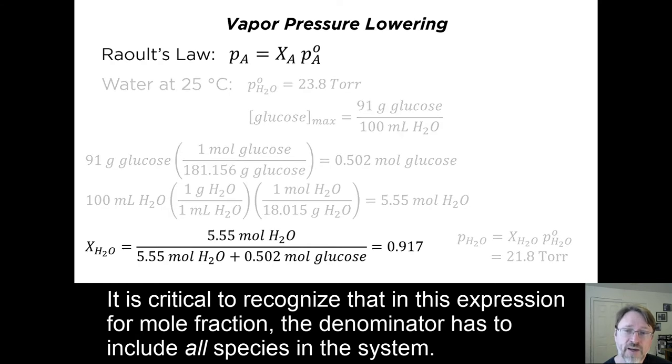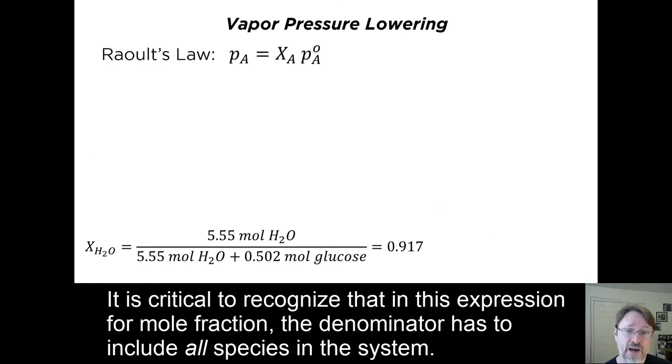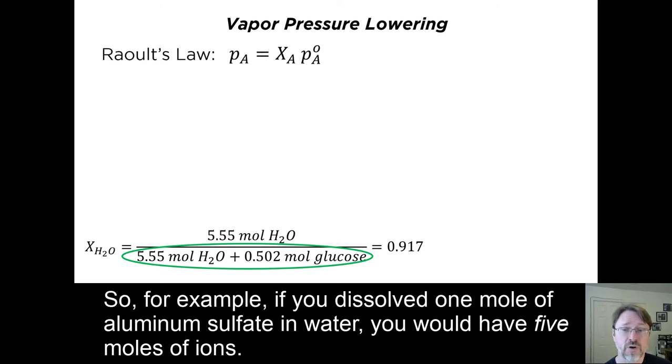It is critical to recognize that in this expression for mole fraction, the denominator has to include all species in the system. So, for example, if you dissolved one mole of aluminum sulfate in water, you would have five moles of ions.